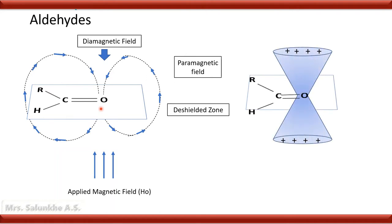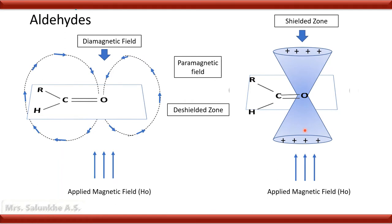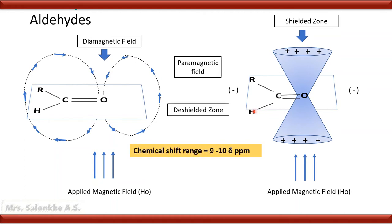In the cup and cone arrangement, when the molecule is placed in the applied magnetic field, there is a shielded zone and a deshielded zone around the molecule. The proton is present in the deshielded zone. In comparison with alkenes, when a proton is present on a carbonyl group, it is highly deshielded because it is further away from the shielded zone. In case of aldehydes, the chemical shift range is 9 to 10 delta ppm, which is the characteristic value for aldehyde group protons.